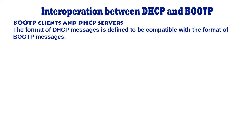The format of DHCP messages is defined to be compatible with the format of BootP messages so that existing BootP clients can interoperate with DHCP servers. Any message received by a DHCP server that includes a DHCP message type option is assumed to have been sent by a DHCP client.